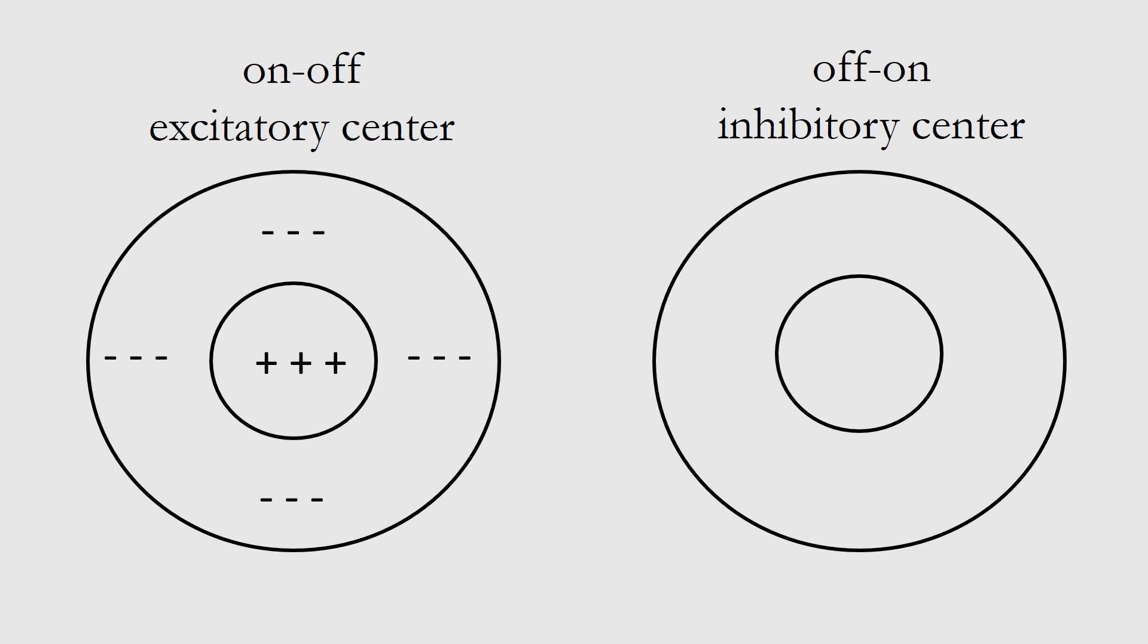We also have off-on ganglion cells which are just the opposite, the inverted version. However, if anything lands on the surrounding area of an on-off cell, it's going to withhold some of those action potentials and fire less frequently. The off-on inhibitory center cells are the exact opposite where if they have activation in the center part of it they stop firing as much, but if you have activation on the surrounding area, that cell is going to fire more frequently.